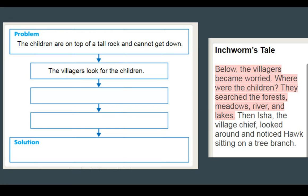Now we need some details. Highlighted on the right again are our details from Inchworm's Tail. It says, 'Below, the villagers became worried. Where were the children? They searched the forest, meadows, river, and lakes.' So we can simply state that as a detail: the villagers look for the children.